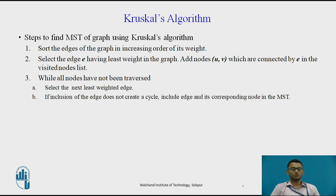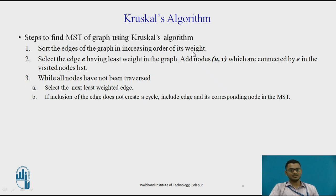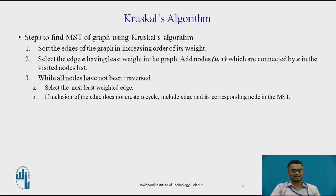These are the steps to find out the MST of a given graph using Kruskal's algorithm. First, to begin Kruskal's algorithm, we sort the edges of the graph in increasing order of their weight. Since the graph given is a weighted graph, we sort all the edges according to their increasing order of weight.